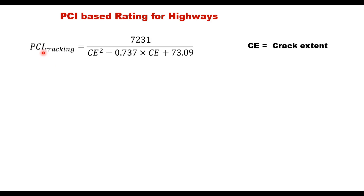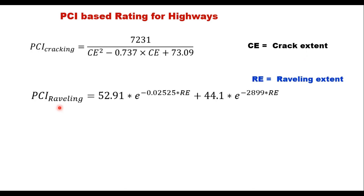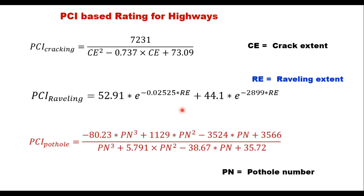PCI for cracking is given by an equation where CE is the crack extent — the surface area of the pavement section affected by cracks divided by the total surface area. Similarly, for raveling, PCI is estimated using the equation: P = 52.91 × e^(−0.02525 × RE), where RE is the raveling extent. For potholes, once you know PN (the number of potholes), PCI for potholes is estimated from the corresponding equation.